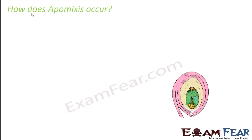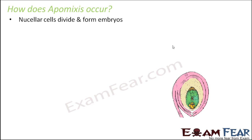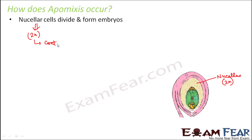There are different ways by which apomixis can occur. The first is by division of the nucellus cells. The nucellus is the mass of cells present inside the integuments. These nucellus cells are diploid cells, and sometimes they start dividing continuously, gradually entering inside the embryo sac and developing into embryos.